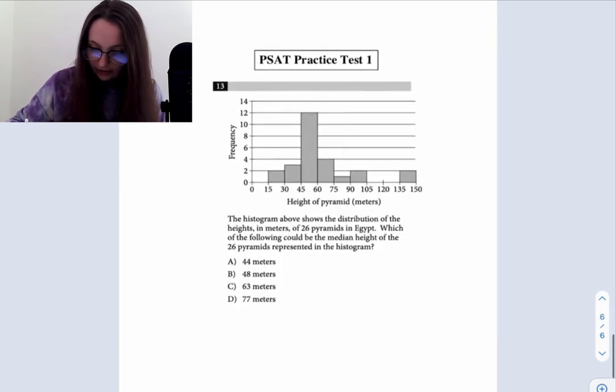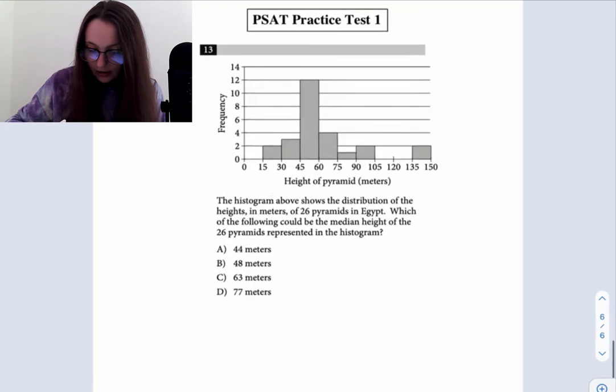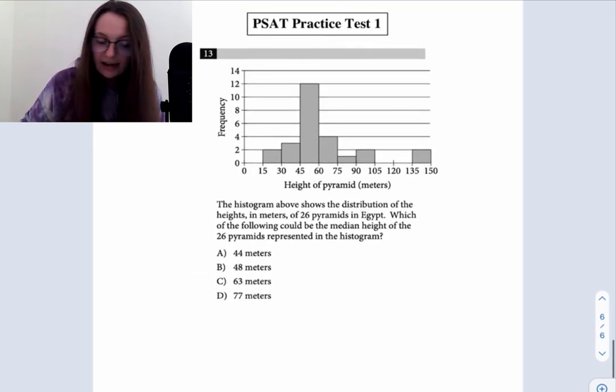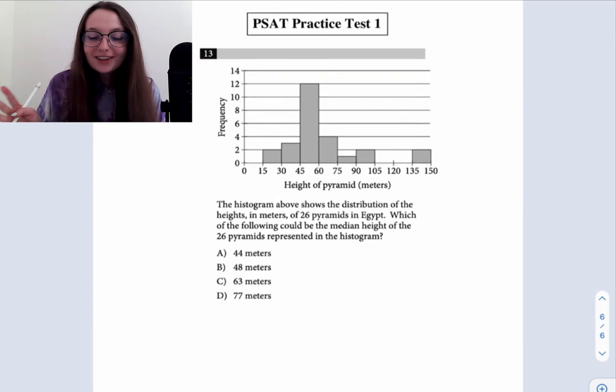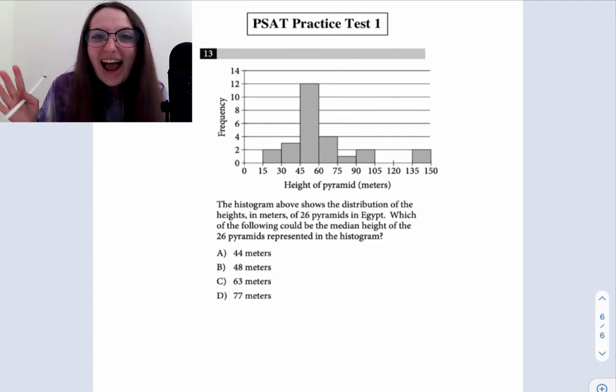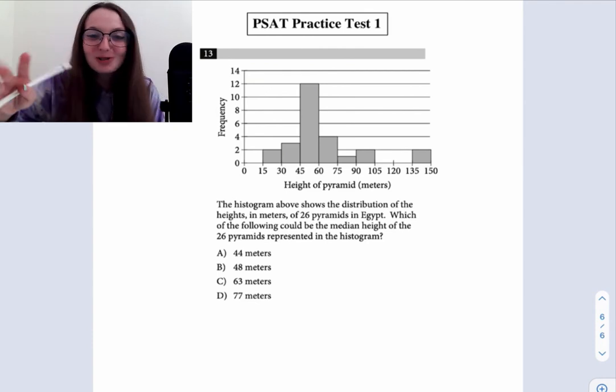Let's check out the next one. We know there are 26 pyramids represented in the histogram. I can't help but think that this looks like a middle finger. I always laugh about this, honestly, because they could have picked really any other shape, but they really had to pick that. Suspicious. No, I'm just kidding.